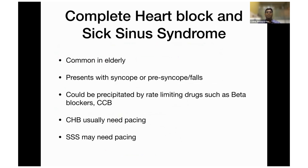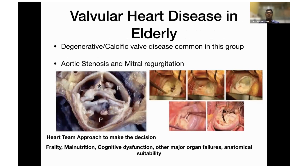Complete heart block and sick sinus syndrome are common in elderly patients. They present with syncope, presyncope, or falls — which can be precipitated by rate-limiting drugs such as beta-blockers and calcium channel blockers. If a patient has complete heart block and hypertension, do not treat the hypertension — the hypertension is compensatory. If you treat the complete heart block, the hypertension resolves itself. Sick sinus syndrome may not need pacing — it can sometimes be left alone or managed medically. But complete heart block might need pacing if the patient is symptomatic. Valvular heart disease is also common in elderly due to degenerative changes. Aortic stenosis and mitral regurgitation are the common ones. Decision-making for further management should be done with a heart team approach involving the patient's family, and suitability for surgery should be assessed using scores like the STS score. These patients should be referred to a patient care center.